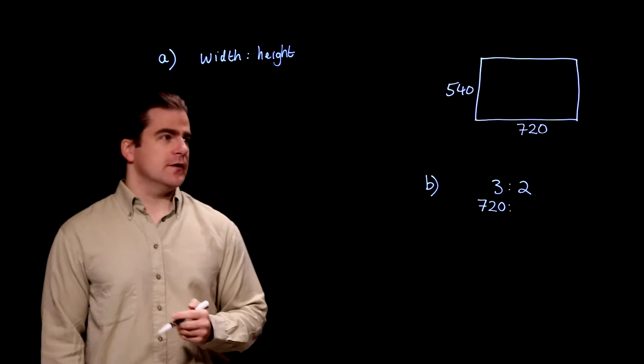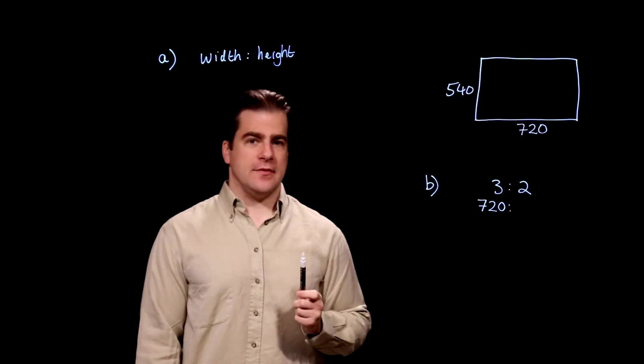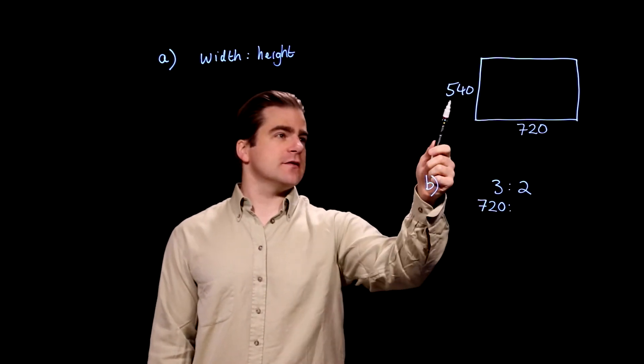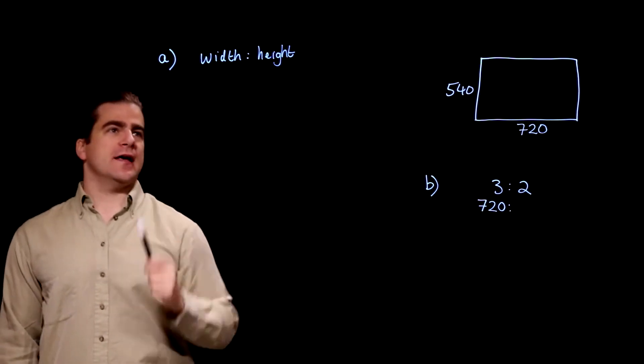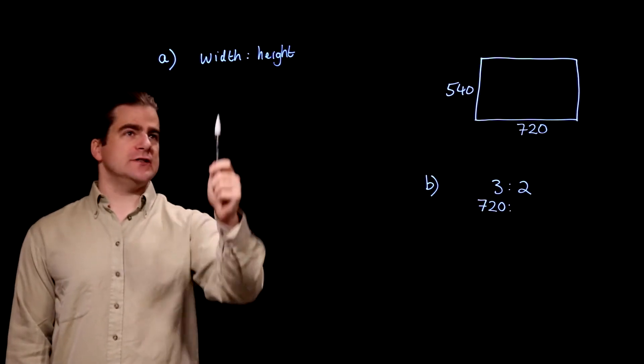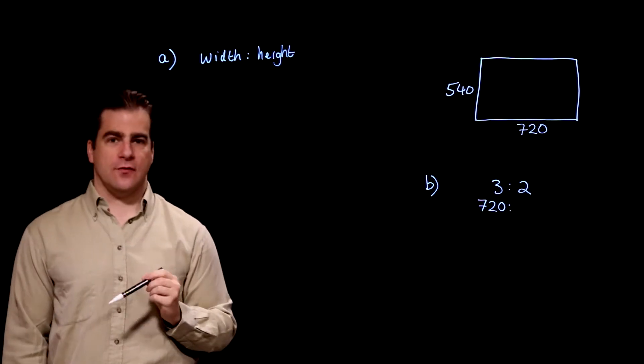Ratios. We have a thing here and it's 720 by 540. Part A. Write down the ratio of the width to the height in its simplest form.